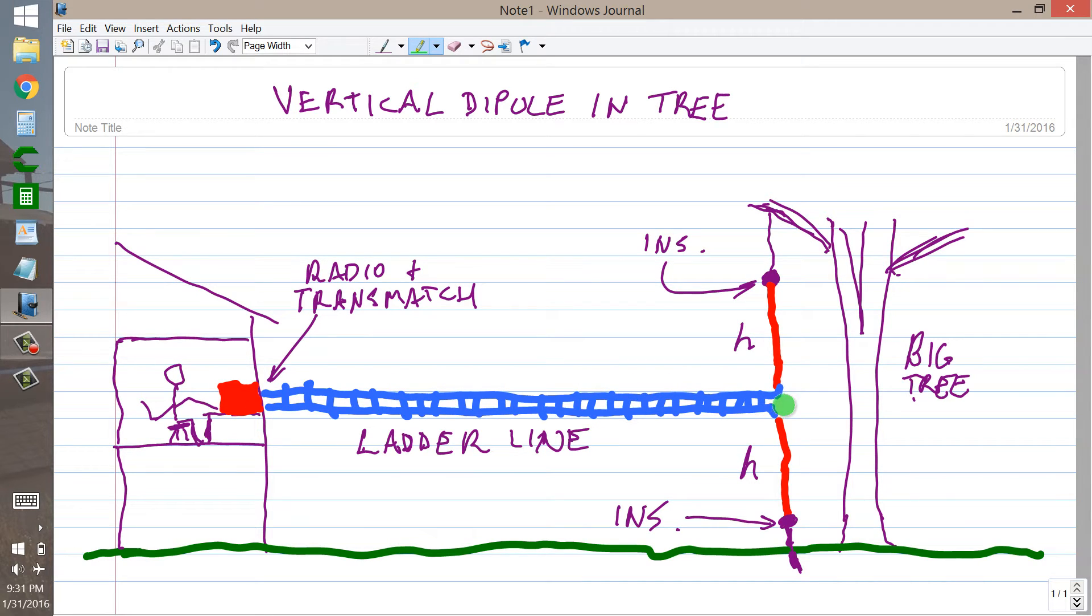shown just exactly like I drew it here, fed with ladder line, preferably ladder line, although the so-called window line may also work. It's an open wire line, low loss, the height should be equal on each half of the antenna, that is, it's a center-fed antenna.